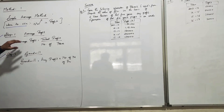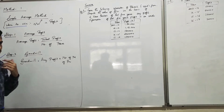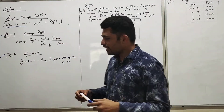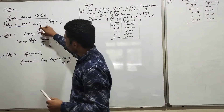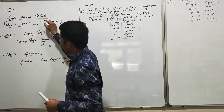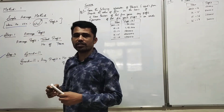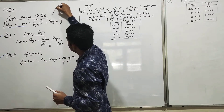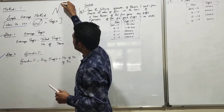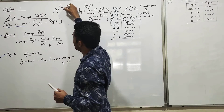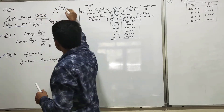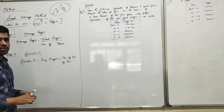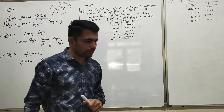A question arises in our mind as to when we are supposed to use this method. We use this method in case the profit is fluctuating — meaning profit is increasing, then decreasing, then increasing, then decreasing. Under such circumstances we are supposed to use the Simple Average Profit Method.